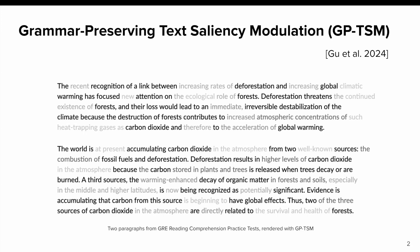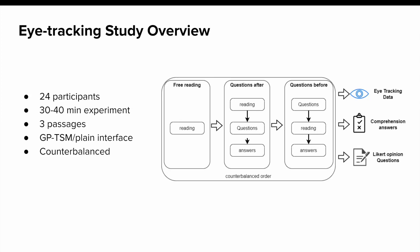So in this study, we seek to understand how GPTSM shapes reading through a within-subjects eye-tracking user study with 24 participants. Each trial consists of reading three separate JRE reading passages using either GPTSM or a plain text interface, with comprehension questions appearing before reading, after reading, or not at all. The conditions were counterbalanced.